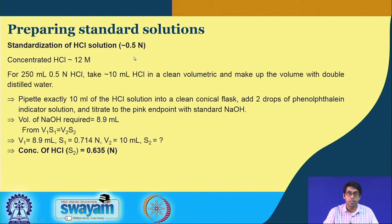Similarly, using this sodium hydroxide solution we determined the strength of the hydrochloric acid. We prepared 0.635 normal hydrochloric acid, which was used to drop the pH of the amino acid to less than 2.